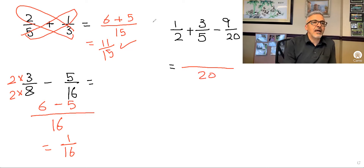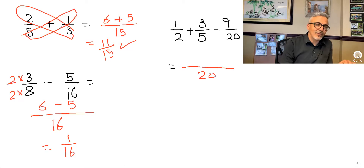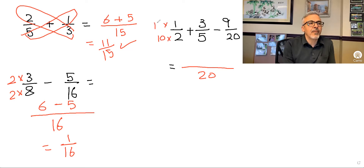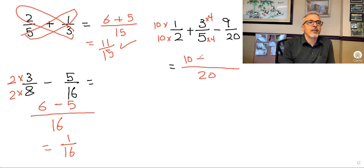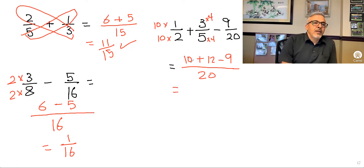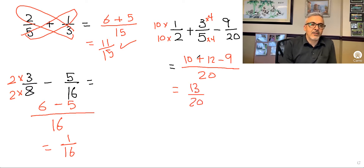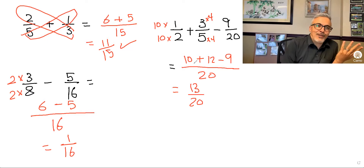The cross method doesn't work with three fractions — it's misleading and you're not teaching fractions. Here, multiply the first fraction by 10 to make the denominator 20, do the same to the top; multiply the second by 4, do the same to the top. Write the 20 once — not three separate fractions. Then 10 times 1 is 10, plus 3 times 4 is 12, minus 9, which stays the same. So 10 plus 12 is 22, minus 9 is 13 over 20.